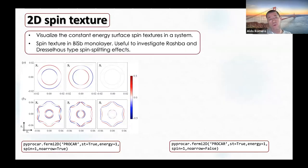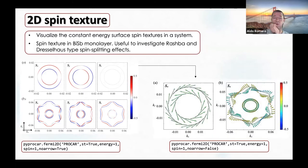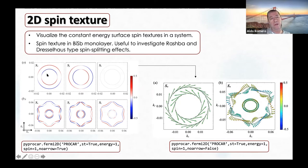Additionally, we have the two-dimensional spin texture that you can plot, with two different methods. One is by colors, where you assign colors depending on the spin direction—for example, red for Sx along the positive axis and blue along the negative axis. Or you can also add arrows to represent the spin texture.